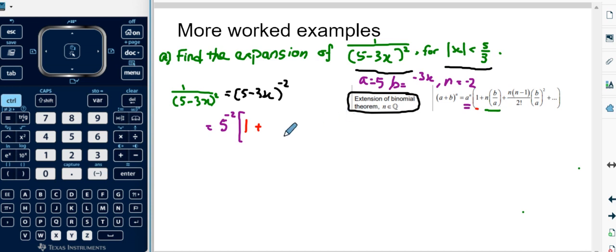n times b over a. n in this case is negative 2, b over a is negative 3x over 5. And then this is to the power of 1 and then plus the next term.